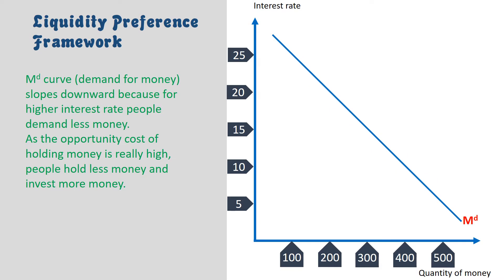The MD curve, or the demand for money, slopes downward because at higher interest rates people demand less money. As the opportunity cost of holding money is really high, people hold less money and invest more money.